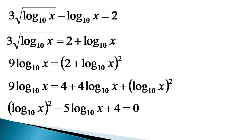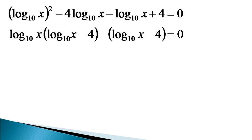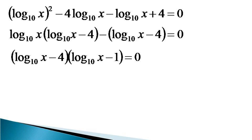We shall solve it through the method of factorization. We express the equation as log of x to the base 10 whole square, minus 4 log x to the base 10, minus log of x to the base 10, plus 4 is equal to 0. Taking log of x to the base 10 common from the first two terms and minus sign common from the last two terms, we get log of x to the base 10 minus 4, taken common from the whole equation, giving log of x to the base 10 minus 4, into log of x to the base 10 minus 1, is equal to 0.